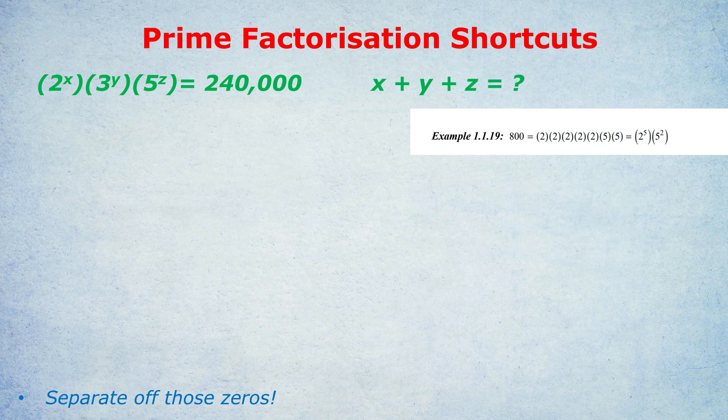By the way, why would we think prime factorization for this question? 2^x × 3^y × 5^z = 240,000. Quite simply, because the numbers on the left are in their prime factorized form, and the number on the right is a big juicy number that we can break down. Essentially, they're asking how many twos have we got, how many threes, how many fives? And we are not going to just keep dividing by 2 or dividing by 3 until we get the answer. No, no. What do we do? Step one: we separate off the zeros.